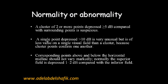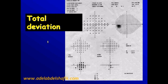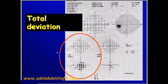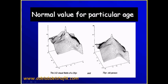Now we come to this area of the printout, which is known as the total deviation. Here we get the actual sensitivities of the patient, and here we get the numbers we call the total deviation. Normally, the sensitivity of the retina varies with age. When starting the machine, we need to enter the date of birth of the patient so we know their exact age.